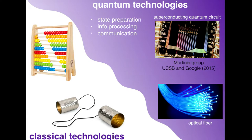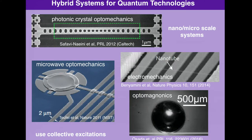We would like to communicate information optically, with light. For example, if we want to process information here, we will be doing it in the microwave regime. This requires low temperatures, but we would like to communicate the information not at low temperatures, so this is best done with light. We would like to design systems able to prepare states, process information, and communicate it. For this we need hybrids — what are called hybrid systems.